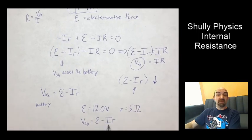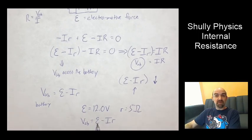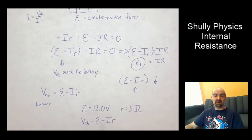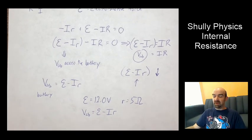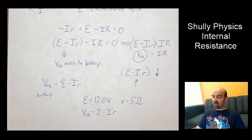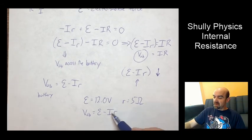So VAB is ε minus I r. Okay. Then when there's zero current, then the VAB is going to be 12 volts. So if you measure that, the potential difference across the car battery, when it's not running, you're going to get a 12 volt reading. But if you measure that potential difference when you're starting the car or running something off it as a load, then there's a current flowing.